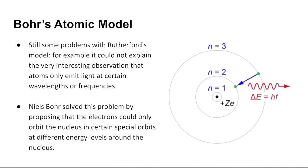Bohr came along and there were still some problems with Rutherford's model. For example, it could not explain the very interesting observation that atoms only emit light at certain wavelengths or frequencies, that each atom gives off its own frequency of light. Niels Bohr solved that problem by proposing that the electrons could only orbit the nucleus in certain special orbits at different energy levels around that nucleus. All of a sudden, these electrons don't just float aimlessly around the atom. They actually float around at a specific distance away from that nucleus.